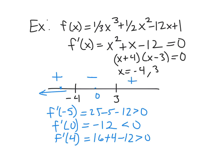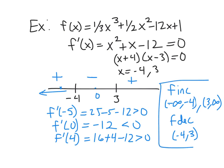So what do I conclude? Well, I know then that f is increasing where the derivative is positive. So from negative infinity to negative 4, and again from 3 to infinity. And it's decreasing in the middle from negative 4 to 3.